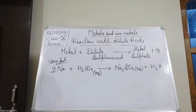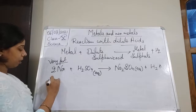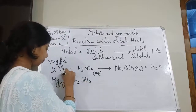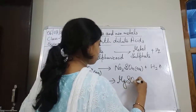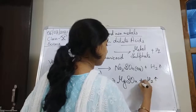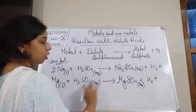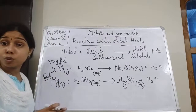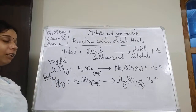Magnesium also reacts very fast with sulfuric acid, but not as violently as sodium. Magnesium (solid) reacts with H₂SO₄ (aqueous) to form MgSO₄ (magnesium sulfate, aqueous) and H₂ is released. The equation is already balanced. Magnesium gives a very fast reaction, though less violent than sodium.